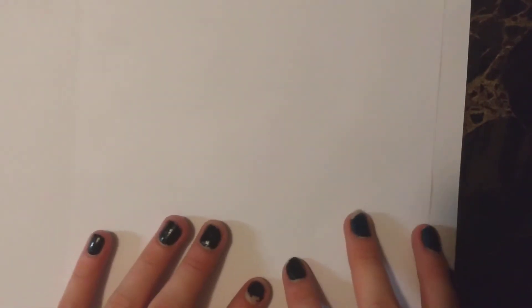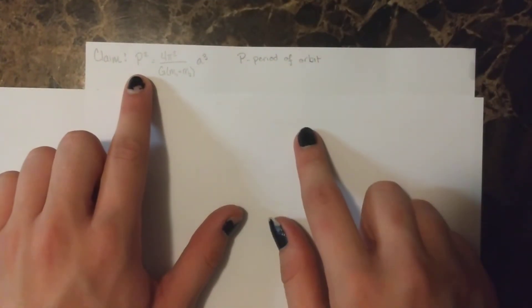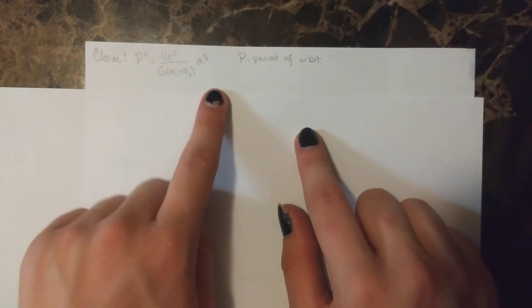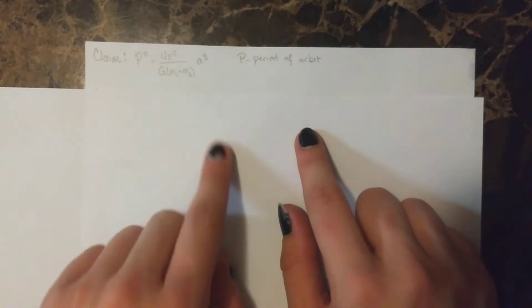Moving on to Kepler's third law, we'll make the claim that p squared, the period of the orbit squared, is equal to 4 pi squared over G times the summation of the masses, multiplied by the semi-major axis cubed.